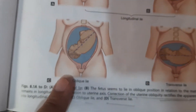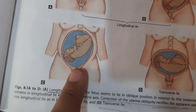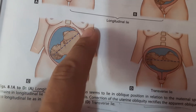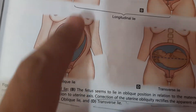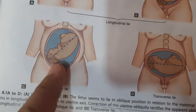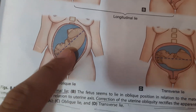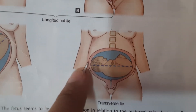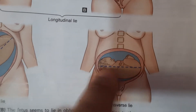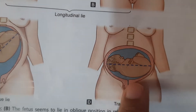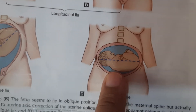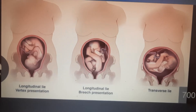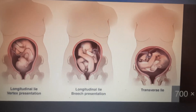In oblique lie, with the uterus in normal position, the long axis of the fetus is oblique with respect to the maternal spine or uterus. In transverse lie, the long axis of the fetus is perpendicular to the long axis of the spine or centralized uterus.